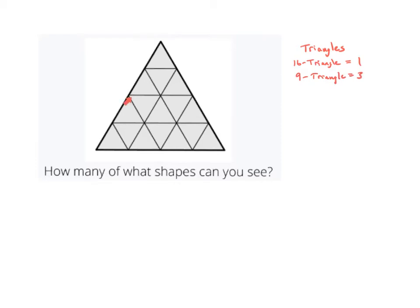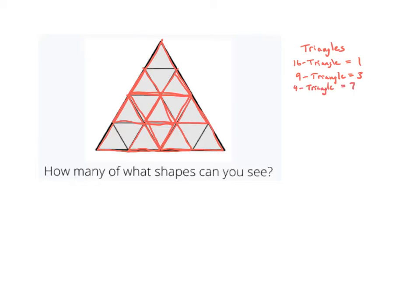There are then some smaller triangles — this one right here is made out of four littler triangles. I see one right there, one right here, one right here, one right here, and then if I go up a little bit I see an upside-down one right here, another one right here, another one right here, and then another one right up here at the top. So these are called four-triangles, and there are seven of them.